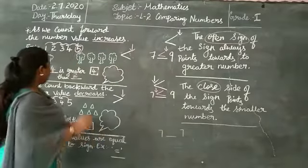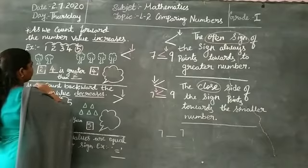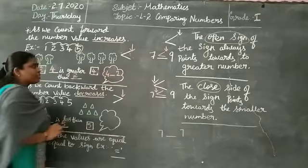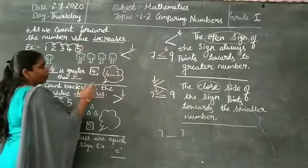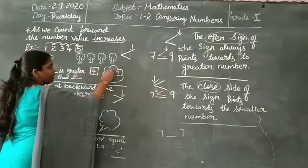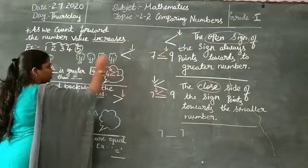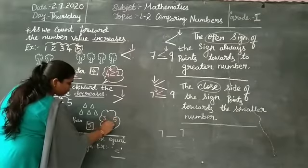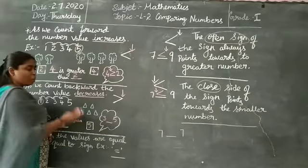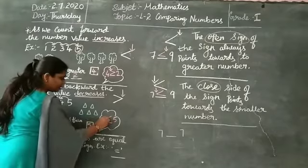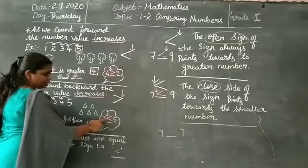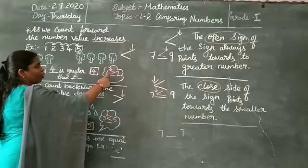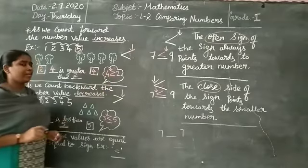So now you tell me — 4 dash 2. How do you find the sign? 4 is greater than 2, so the open sign should be towards 4. And here, 3 is less than 5, so the close point should indicate towards 3. The closing point towards the lesser number and the open point indicating towards the greater number.